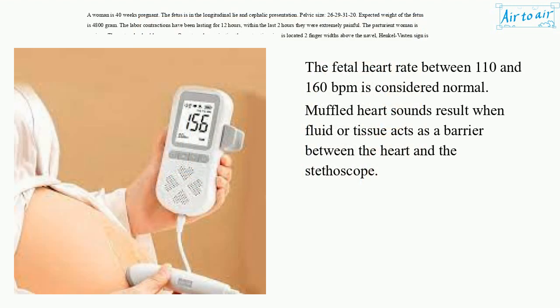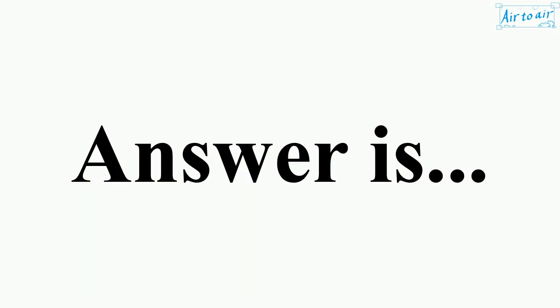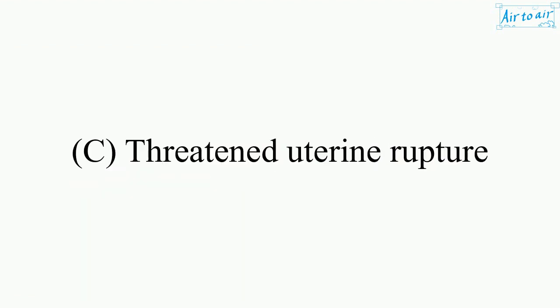The fetal heart rate between 110 and 160 BPM is considered normal. Muffled heart sounds result when fluid or tissue acts as a barrier between the heart and the stethoscope. The answer is C: threatened uterine rupture.